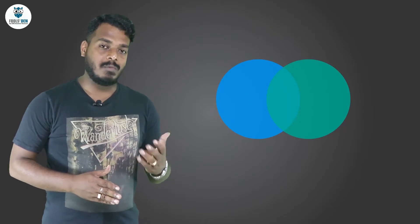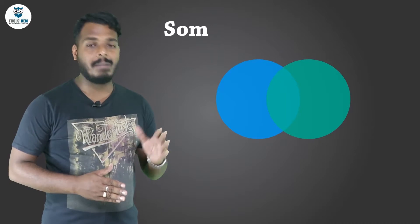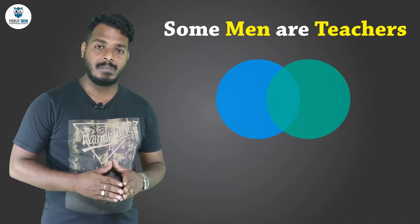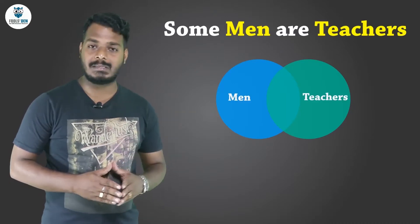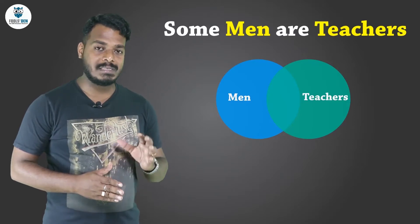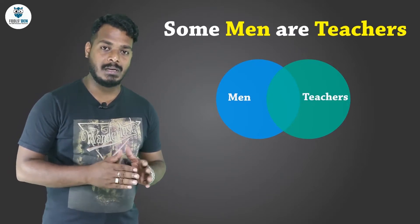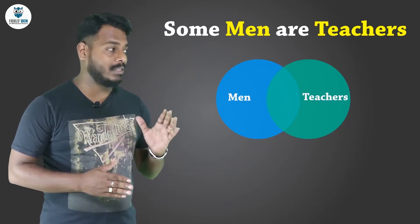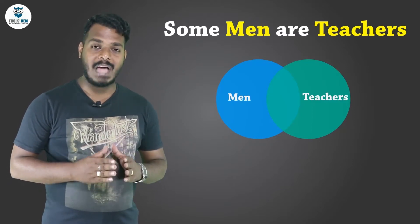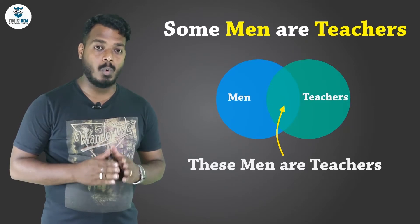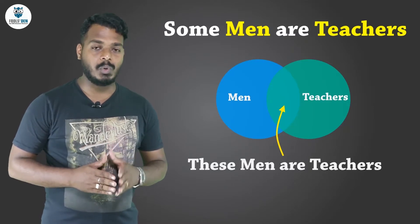We can take one more example to understand it better. Say I take an example: some men are teachers. It can be represented something like this. Here the first circle represents men, the second circle represents teachers, and the common area you see in between the two circles that represents those men who are teachers.